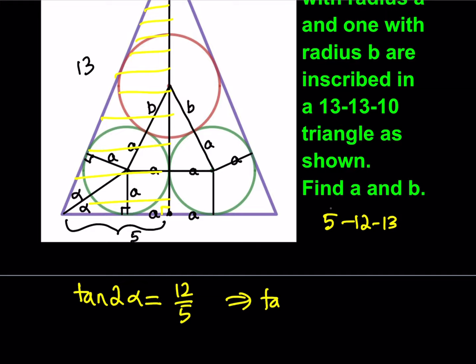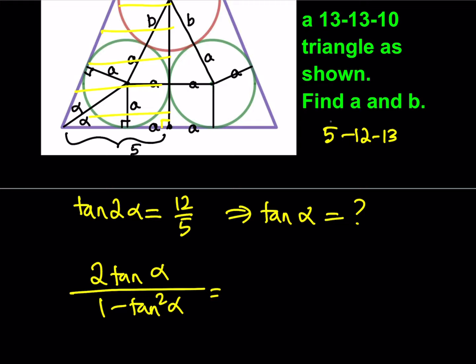Now, how do you find tangent α from tangent 2α? That's what I'd like to use. Well, there's a formula for it. Tangent 2α can be written as 2 tan α divided by 1 minus tan² α. This is the double angle formula. From here, you're going to get a quadratic in tangent α, which is going to give you two solutions, but one of them is not going to be valid, obviously. But I'm going to do it differently because it's more fun that way.